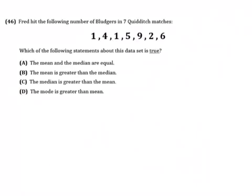Which of the following statements about this data set is true? A, the mean and the median are equal. B, the mean is greater than the median. C, the median is greater than the mean. And D, the mode is greater than the mean.